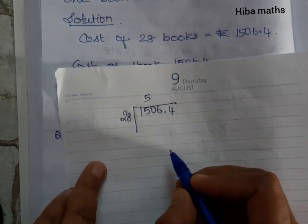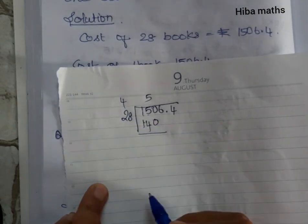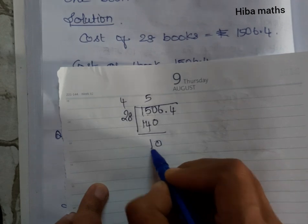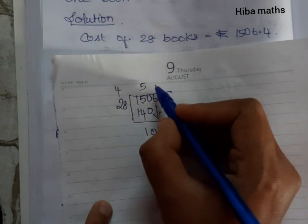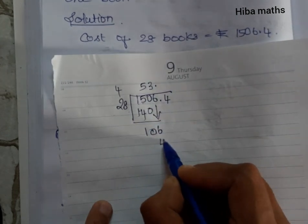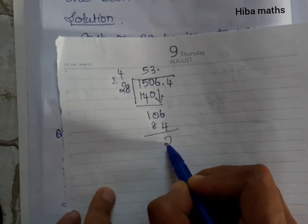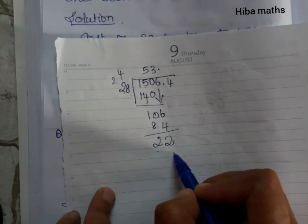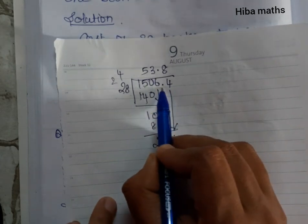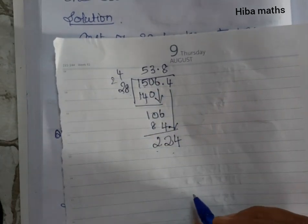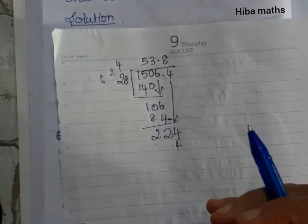First, we use the 5 table. 5 eights are 40; balance 4. 5 twos are 10; 10 plus 4 is 14. 0 minus 4: bring down to get 10. Then 3 table: 8 threes are 24; balance 2. 3 twos are 6, carry. 6 minus 4 is 2; 10 minus 8 is 2. Then 8 table: 8 eights are 64; balance 6. 8 ones are 8.